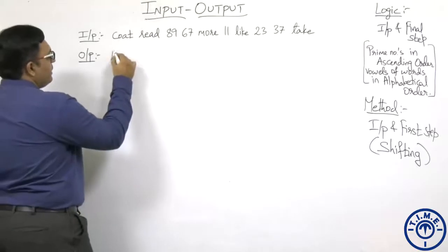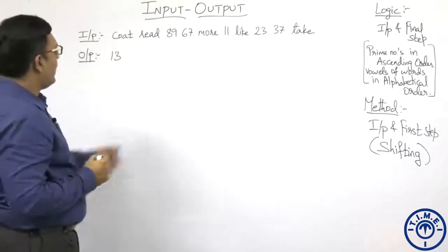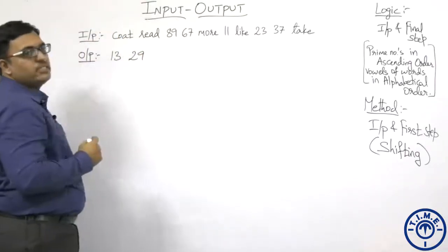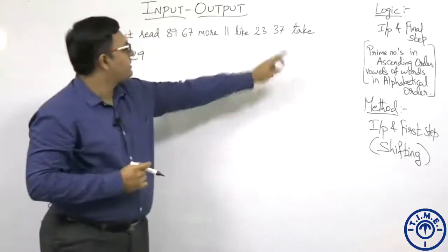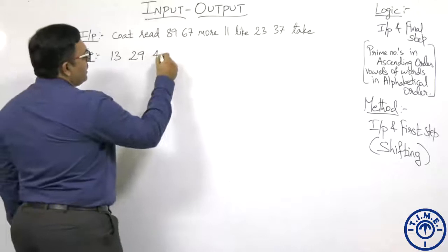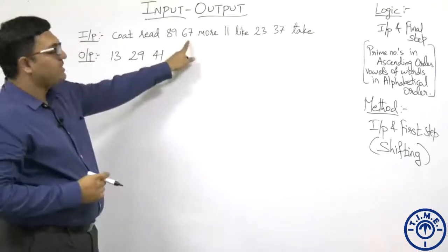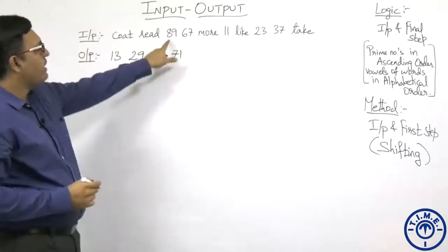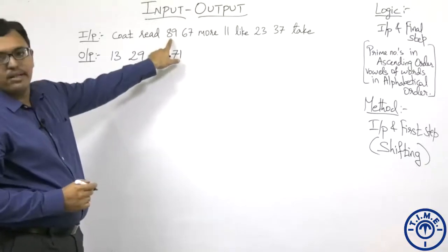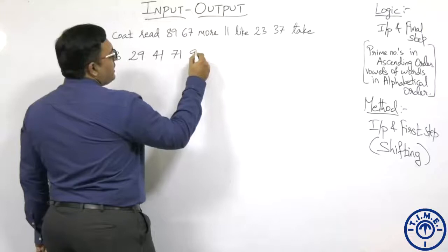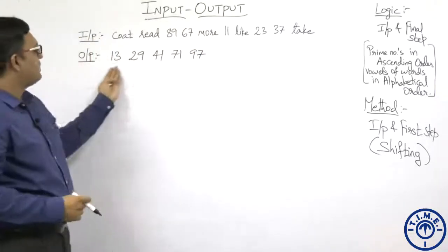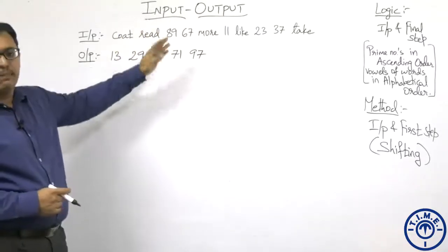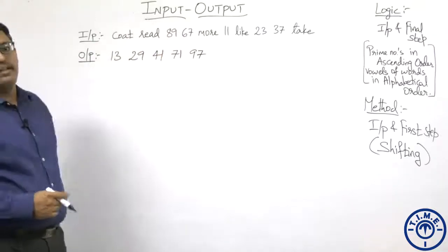After 37, the next prime number is 41. After 67, the next prime number is 71. And 89 is the highest number in the input — the next prime number for 89 is 97. So the numbers in the output arranged in ascending order are: 13, 29, 41, 71, 97 — the next prime numbers to the input numbers arranged in ascending order.